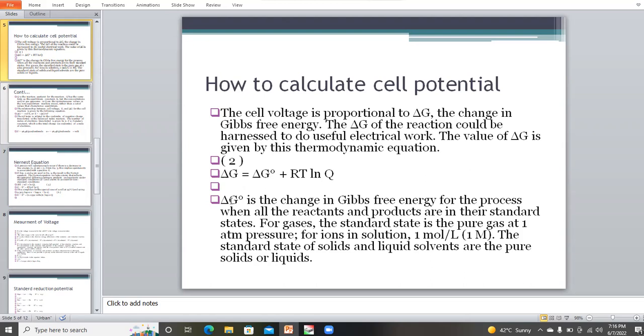Change in Gibbs free energy is for the process when all the reactants and products are in their standard states. G0 represents the standard state of all reactants and products. For gases, the standard state is 1 atm pressure or ions in solution at 1 mol per liter. The standard state of solid and liquid solvents are pure solids or liquids.